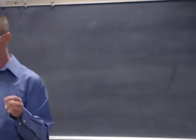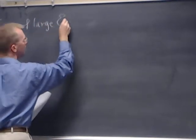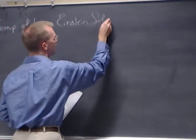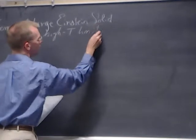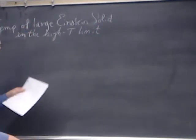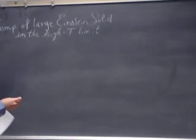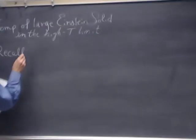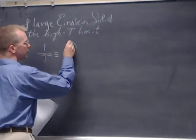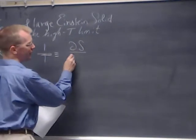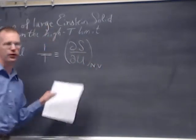Now that we know the relationship between temperature, entropy, and energy, I'll derive the temperature of a large Einstein solid in the high temperature limit. Recall the definition of temperature — our theoretical definition: 1 over T equals the partial derivative of S with respect to U, while number and volume are held constant.